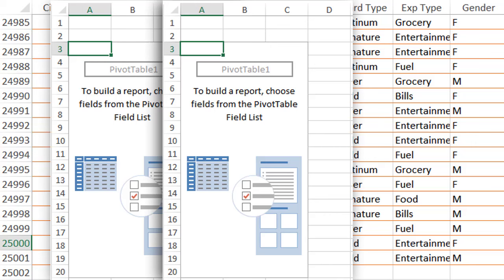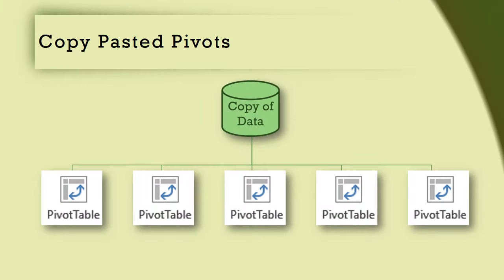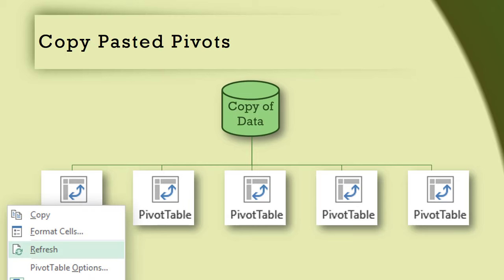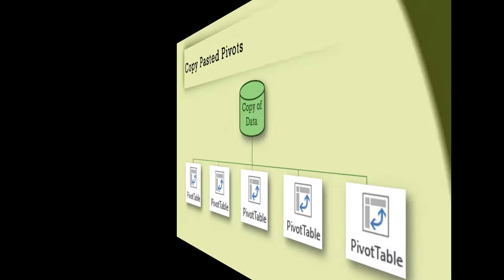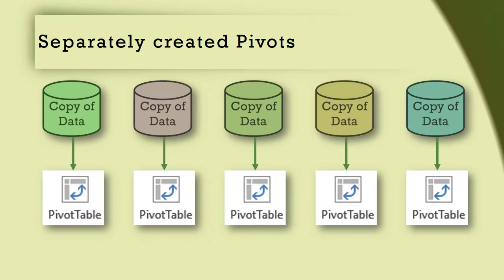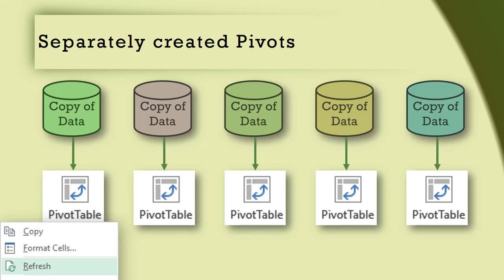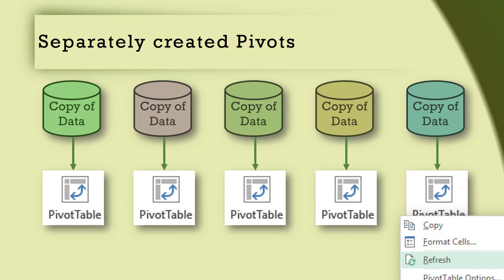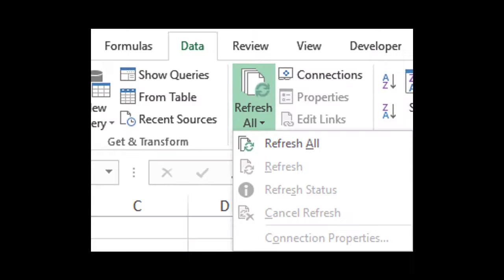This is a very common reason why files become unnecessarily large. If all pivots use the same copy of data, refreshing one of them will refresh all of them. If multiple pivots are independently created, they have their own copies of data — that's why you must refresh them one by one. Of course there is a Refresh All command in the Data tab which also works.